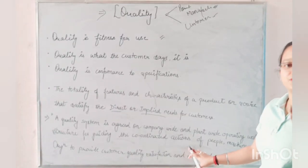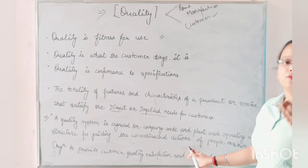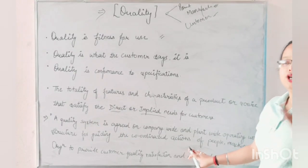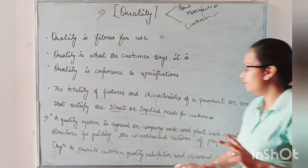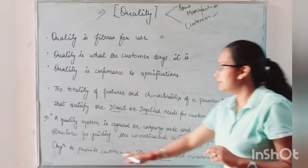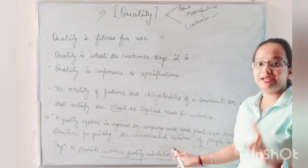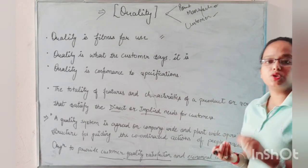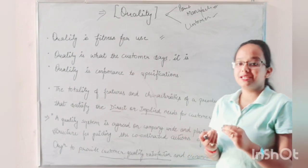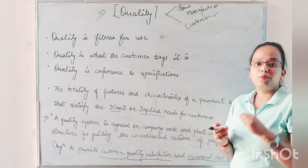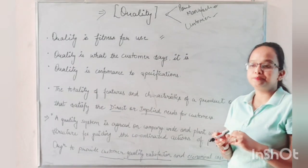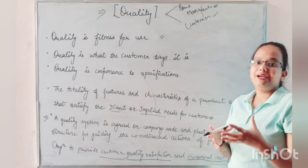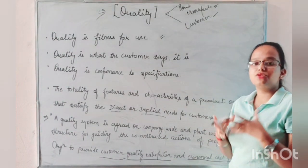In this system, you have to coordinate the organization — whether it is people or machines. And at the end, the basic concepts you have to achieve are: first, customer quality satisfaction — you must provide customer quality satisfaction. And second, economical cost of quality — if you need to provide quality but it is at a very high cost, then there is not true customer satisfaction. So basically, customer satisfaction must be given in every aspect, covering both direct and implied needs.